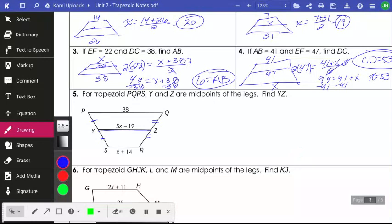the midsegment in this case, which is 5X minus 19, is equal to the average of your bases. So I'm adding my two bases. The top one was 38. The bottom one is X plus 14. So I'm adding them together. And when you're averaging, you're dividing by 2. So I need to get rid of that 2 in the denominator. So like we did on number 3 and 4, I am going to multiply both sides by 2. Now you have to be careful here. When I multiply this by 2, I'm going to have to distribute it. Okay,